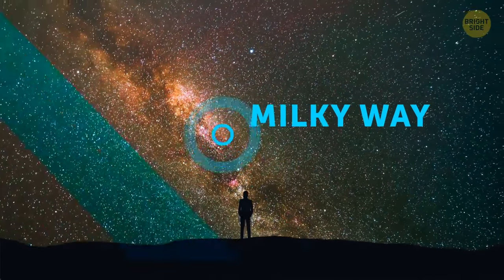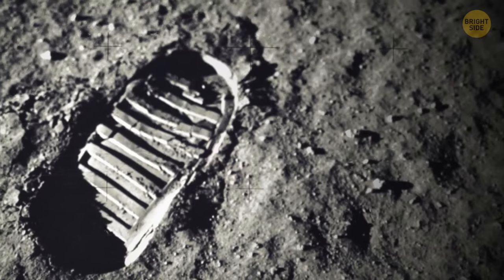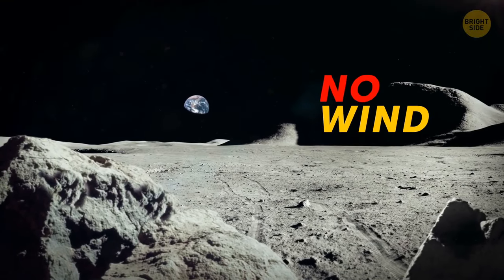It was thought that the Milky Way is a belt before, but now we know it's a spiral galaxy. Footprints on the Moon can't disappear, because there's no wind to blow them off the surface.